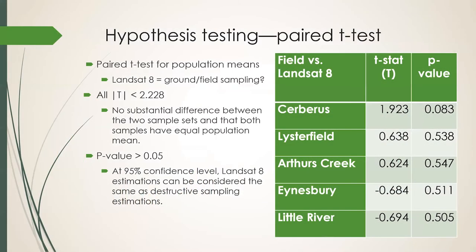I used a paired t-test to test if curing estimates calculated by Landsat-8 and ground sampling have equal population mean. Supported by the table on the right, we can say that there is no substantial difference between the two sample sets, and that both samples have equal population mean. We can conclude that at 95% confidence level, Landsat-8 estimates can be considered the same as destructive sampling estimations.